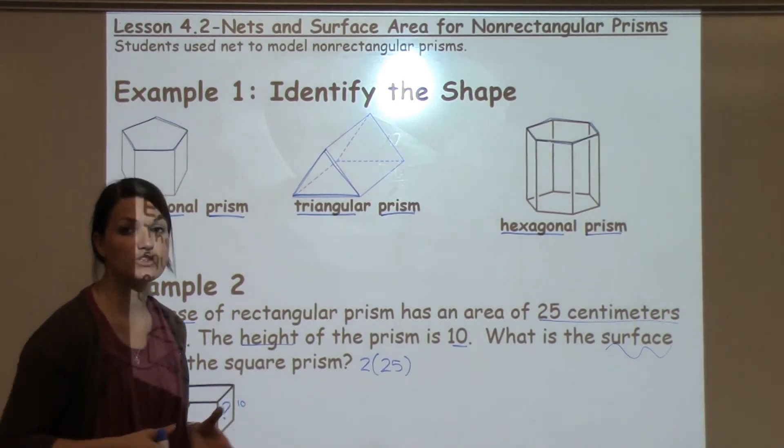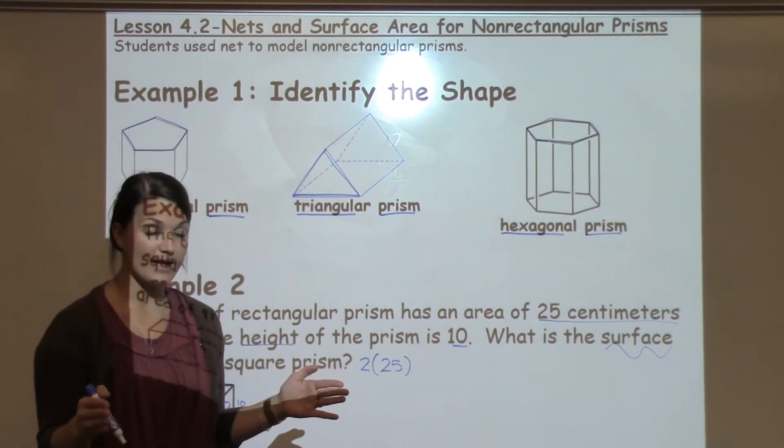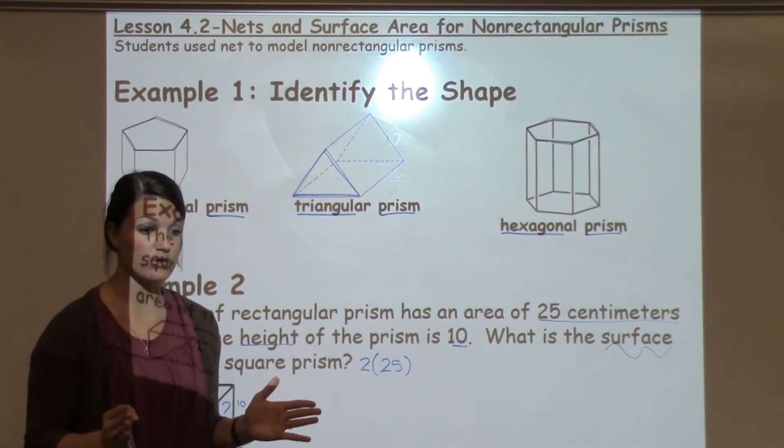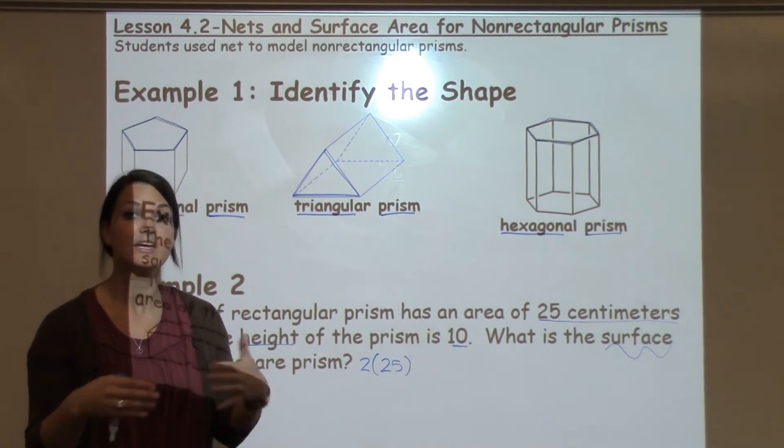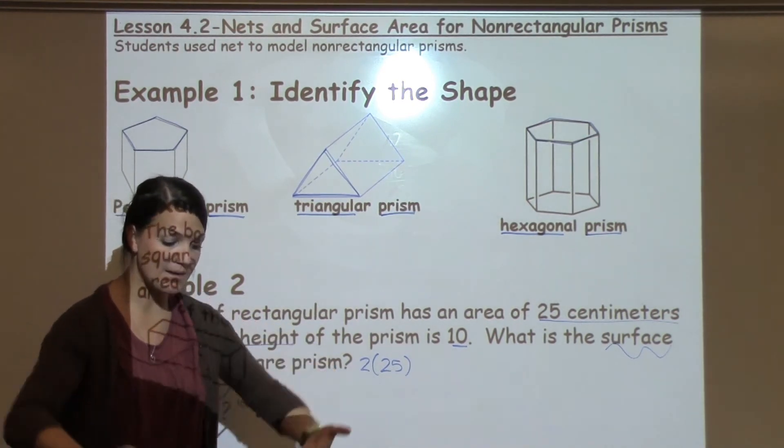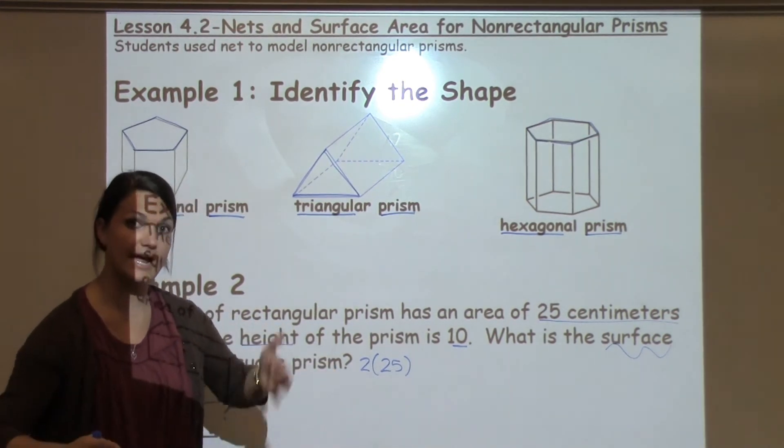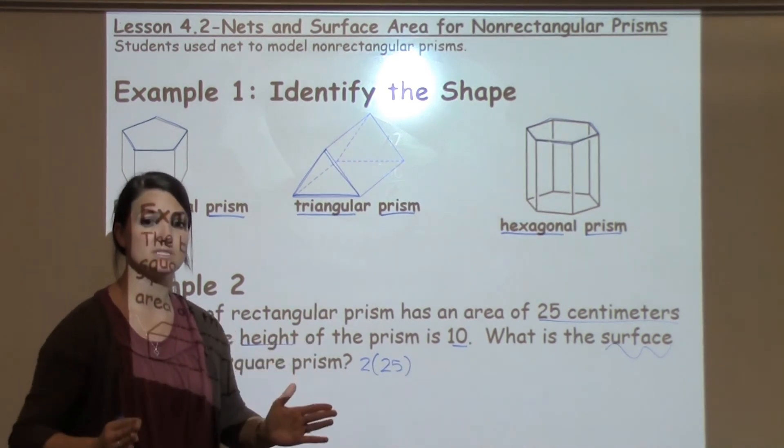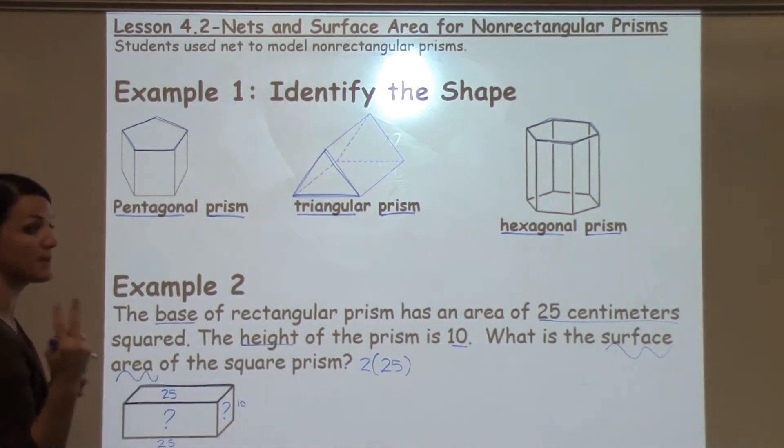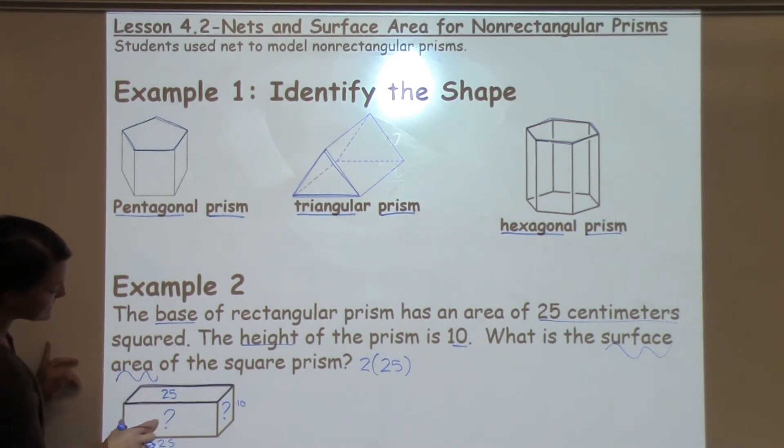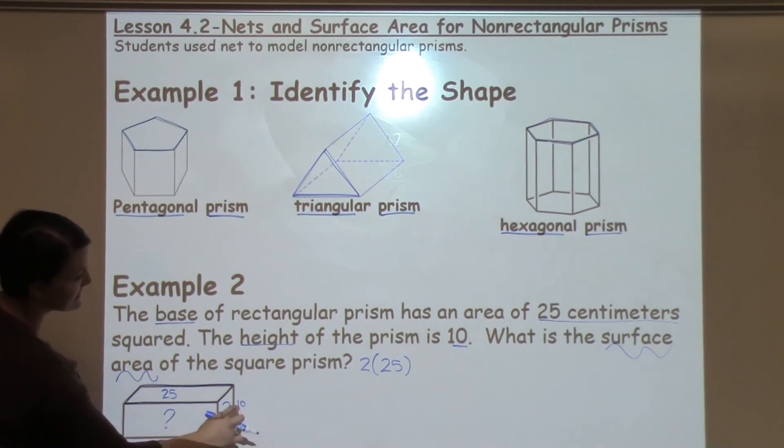So again, if you need to help your student visualize it, I like to pull, at school I like to pull out a rectangular Kleenex box and have them look. This is the top, there's something on the bottom. This is the side, there's something on the side. And have them see that those are equal to each other, but there's two of them. All right, so we're going to go ahead and figure out what is the area of this front face and what is the area of the side face.